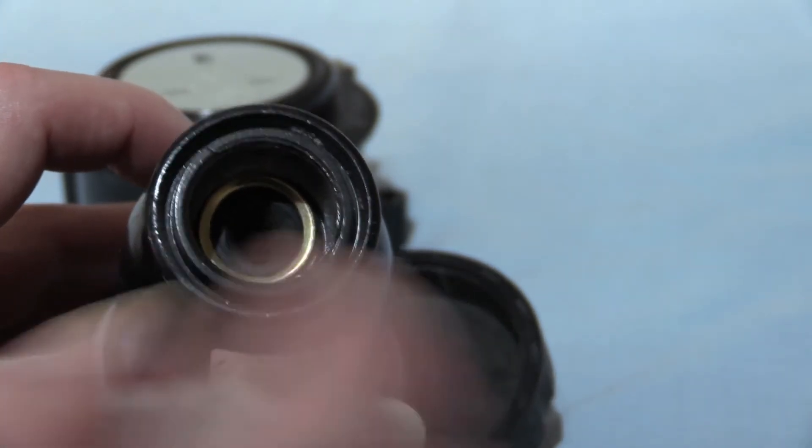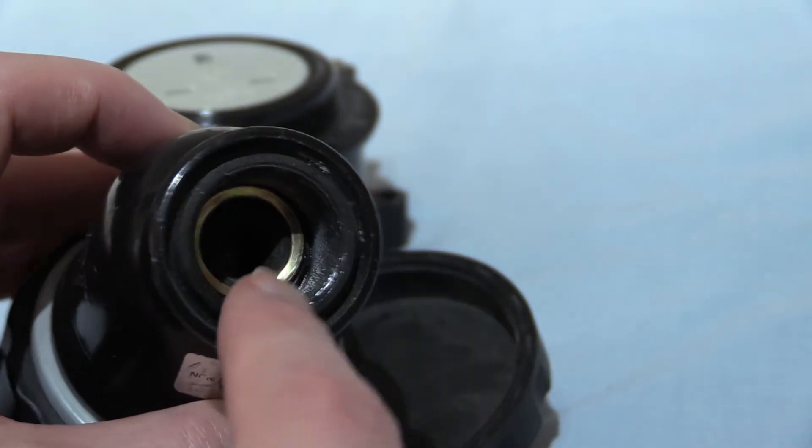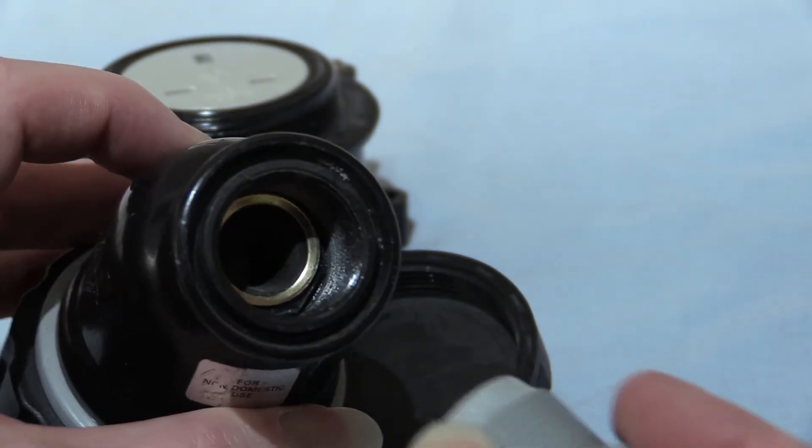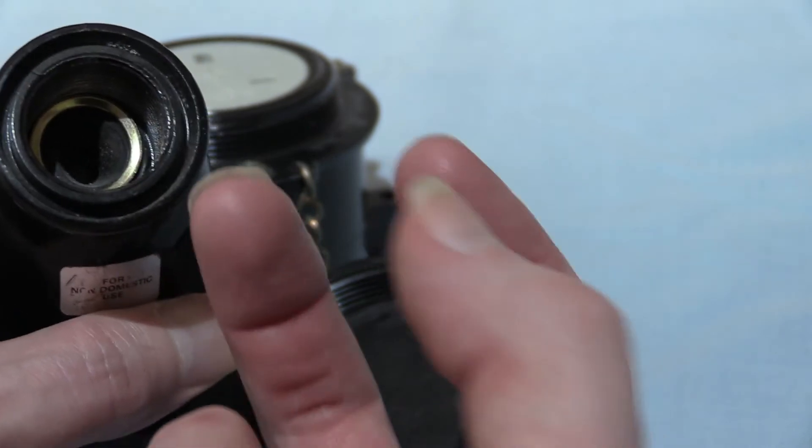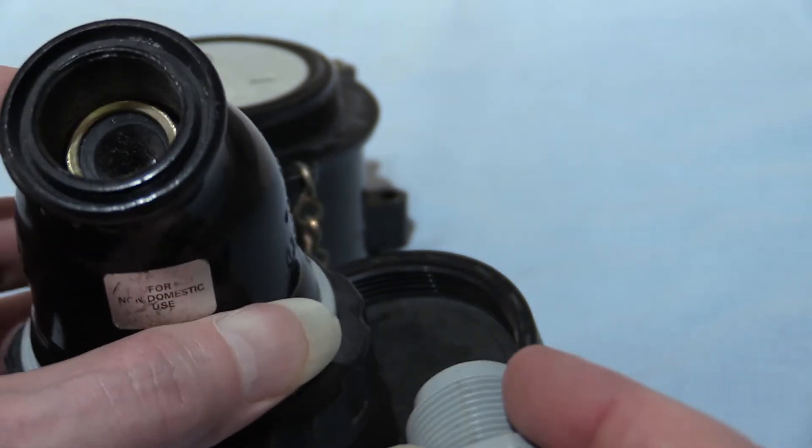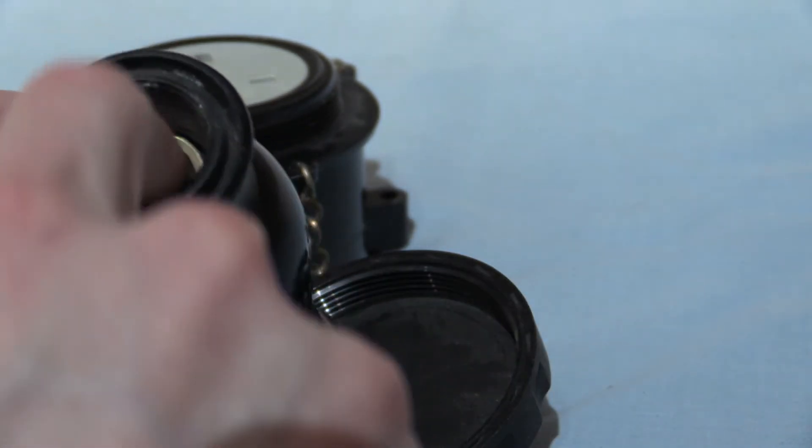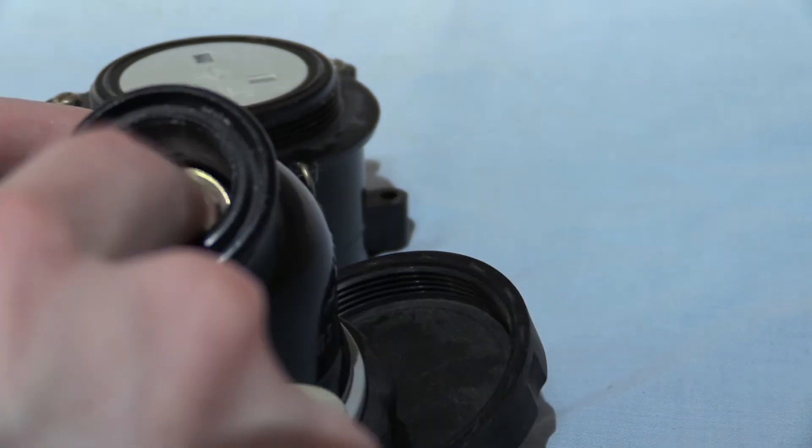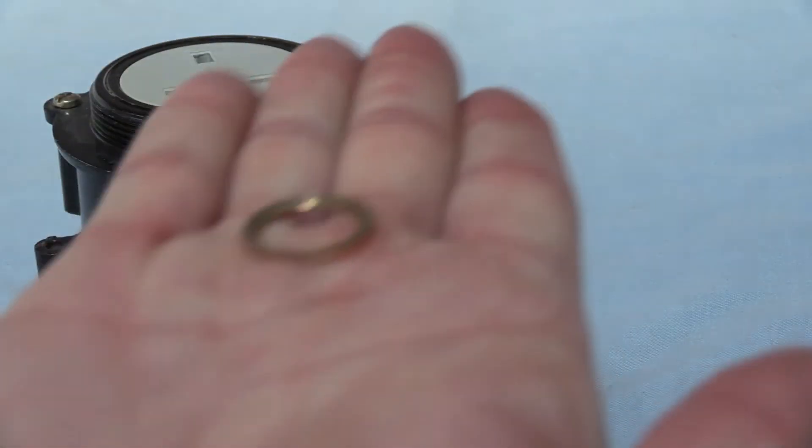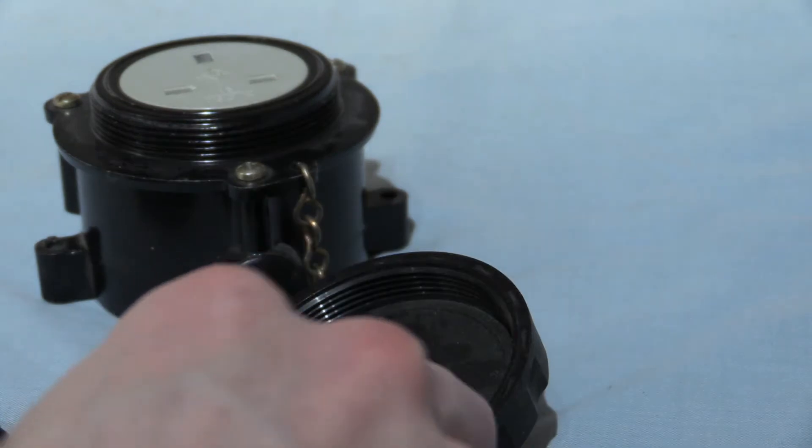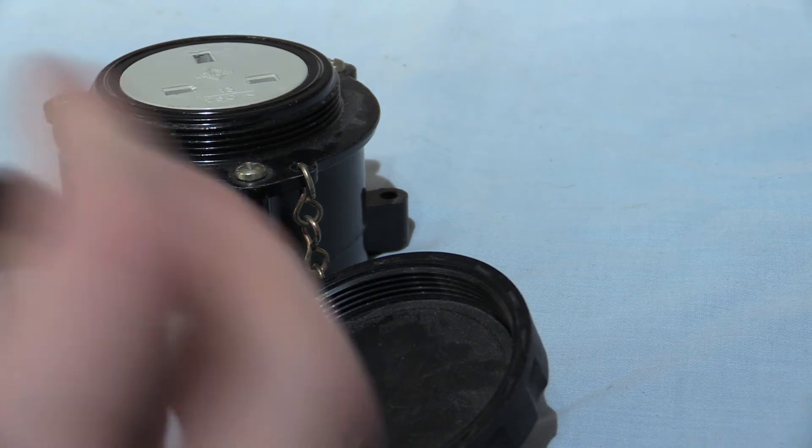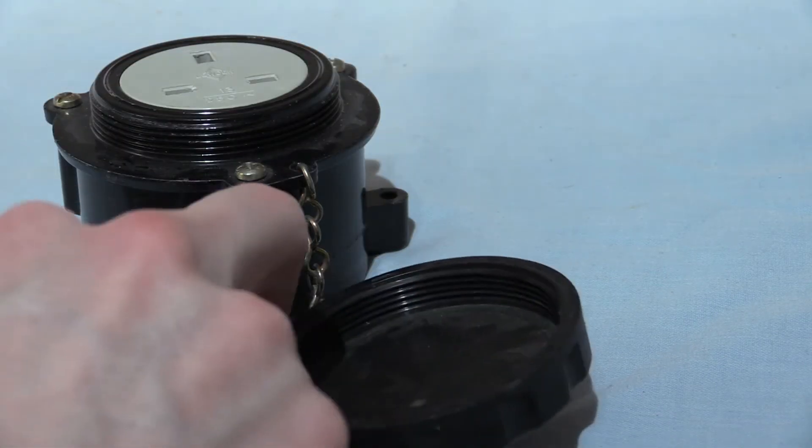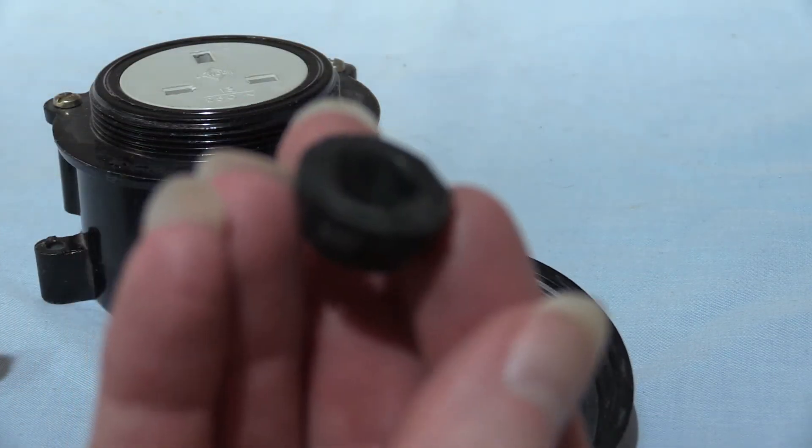When you screw that in there, it presses up against that rubber bung. There you go, you can see the hole in there, how small that is. And as you tighten that down, it presses up against that metal little ring in there, squashes that in there, and as it does so, the hole closes up and grips the flex.